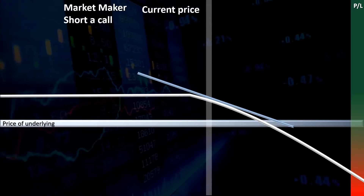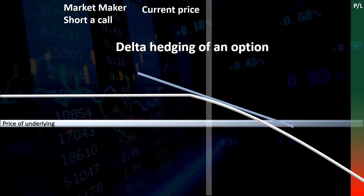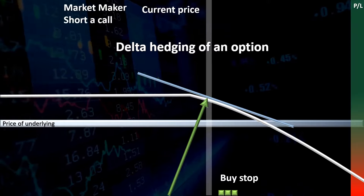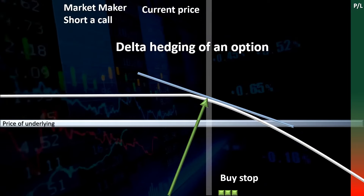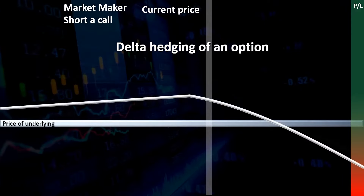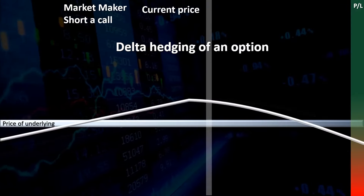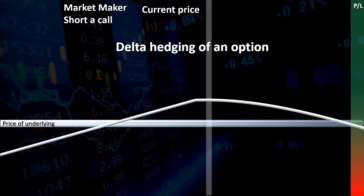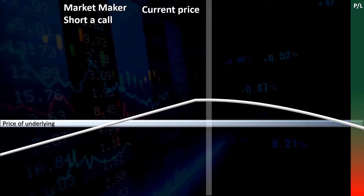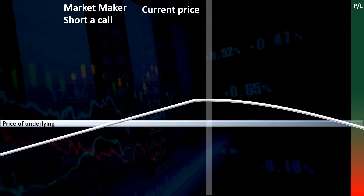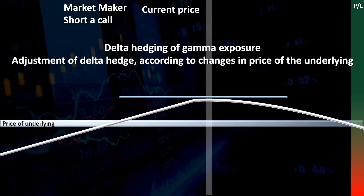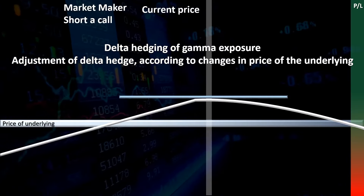Buying a call forces a market maker to delta hedge this position by buying stock proportional to a line going perpendicular to the delta of the option. The delta is the slope of the P&L of the option at the current price. The act of delta hedging by the market maker essentially rotates their P&L profile for the option such that the delta is flat at the current price. As mentioned in a previous video, changes in the price creates gamma exposure for market makers and forces them to dynamically adjust their delta hedge by buying or selling stock proportional to a line going perpendicular to the new delta.